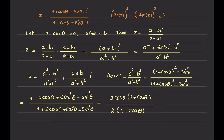The common factors cancel: 1 plus cosine theta cancels top and bottom, and the 2's cancel as well. So what I get finally is that the real part of my complex number is equal to cosine theta. Very simple.